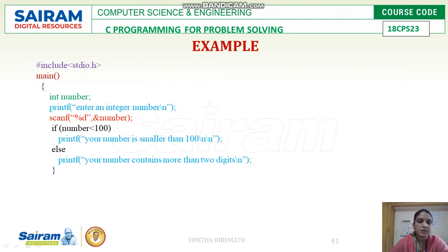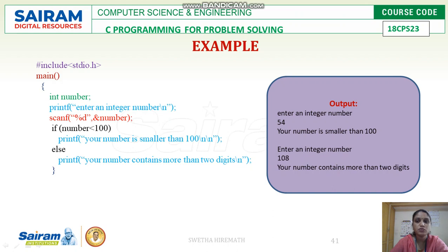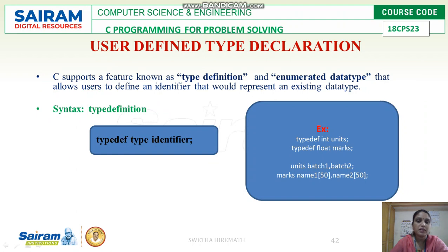In another example, 'int number' — number is a variable of integer data type. We enter an integer number and check whether it is smaller than 100 or greater than 100. If the number entered is below 100, the program prints 'Your number is smaller than 100'. If a three-digit number is entered, the program outputs 'Your number contains more than two digits'. For example, entering 54 gives 'Your number is smaller than 100', and entering 108 gives 'Your number contains more than two digits'.